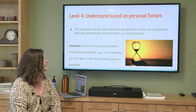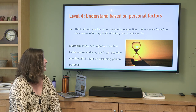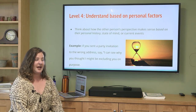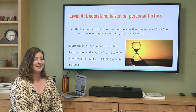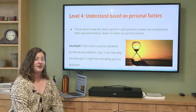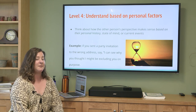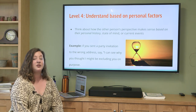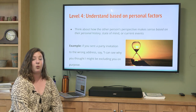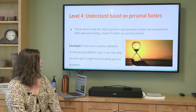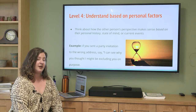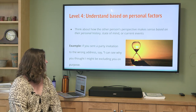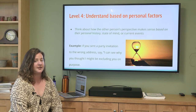Level four is understanding based on personal factors. We want to think about how the other person's perspective makes sense based on their personal history, state of mind, or current events. For example, if someone has social anxiety and didn't do well in a spelling bee in front of the school, we want to recognize that their experience may be very different from ours. Another example: if you sent a party invitation to the wrong address for a friend with a history of difficult relationships, you might say: 'I can see why you thought I might be excluding you on purpose — and I'm not.'